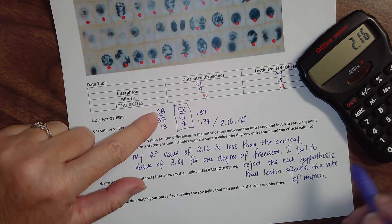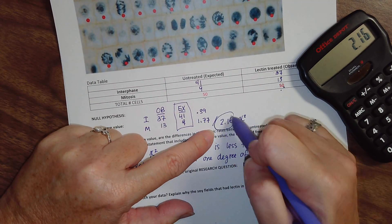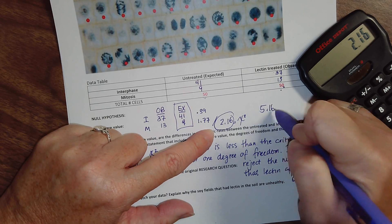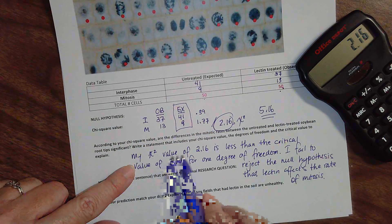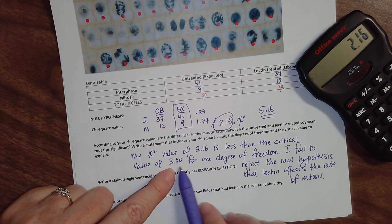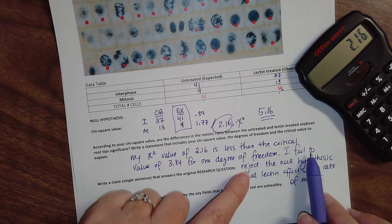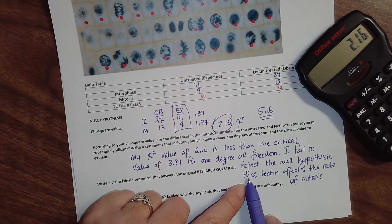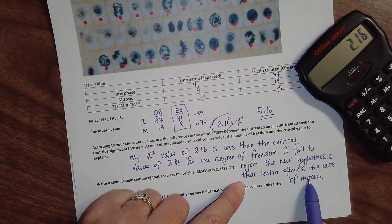Now, had my critical or had this value here been 5.16, then I would have said my chi-square value of 5.16 is greater than the critical value of 3.84 for one degree of freedom. I reject the null hypothesis. Lectin does affect the rate of mitosis.